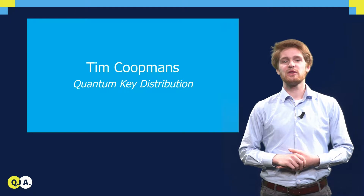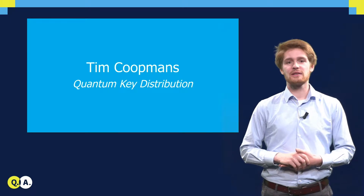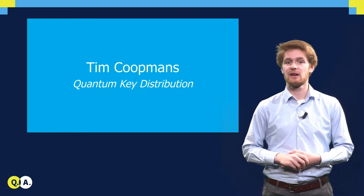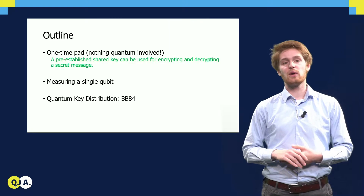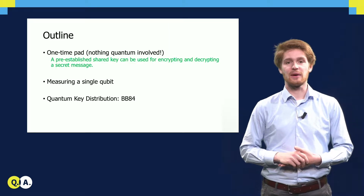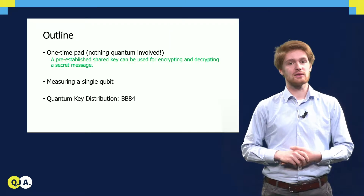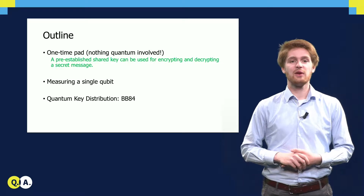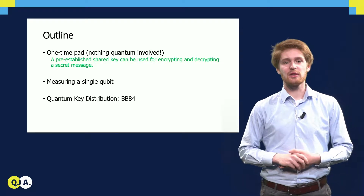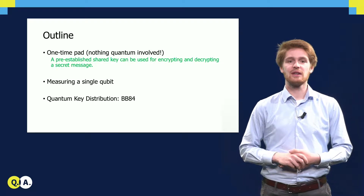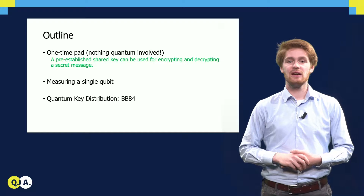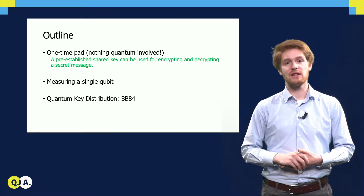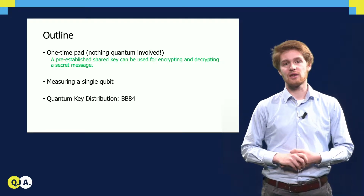In the previous video, we saw how the one-time-pad scheme can be used to send a secret message securely. There is nothing quantum about the one-time-pad scheme — it only involves classical zeros and ones. In this video, we will use a quantum key distribution scheme to generate a secret key, which can then be used in the one-time-pad scheme for sending a message securely.